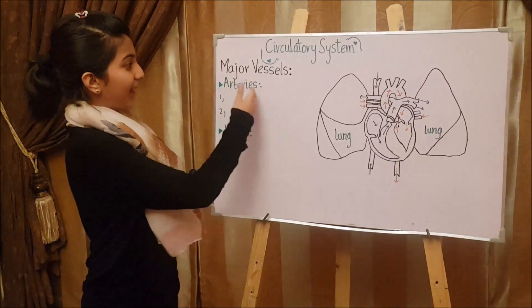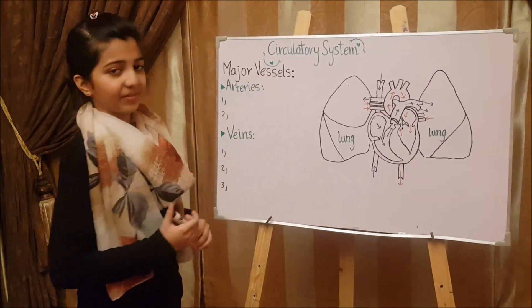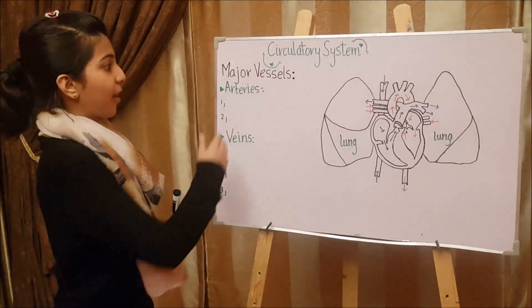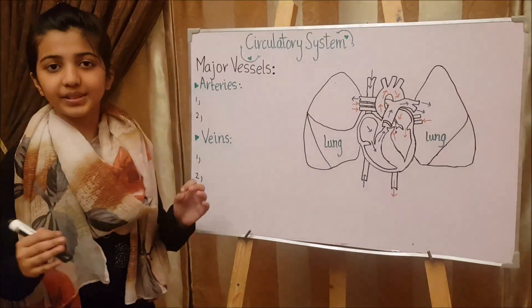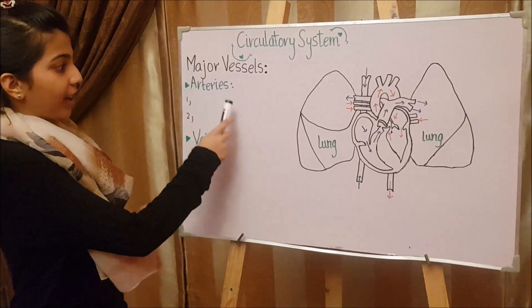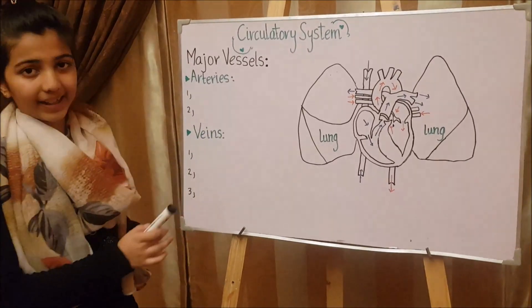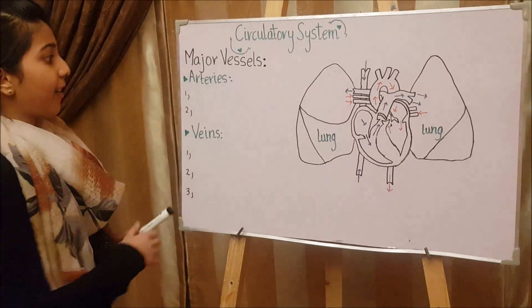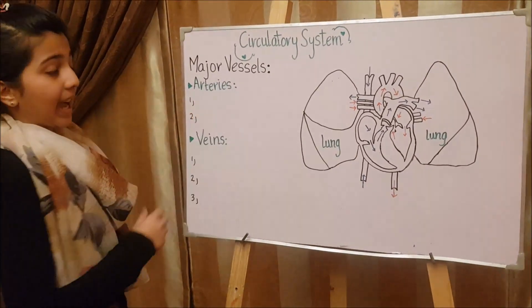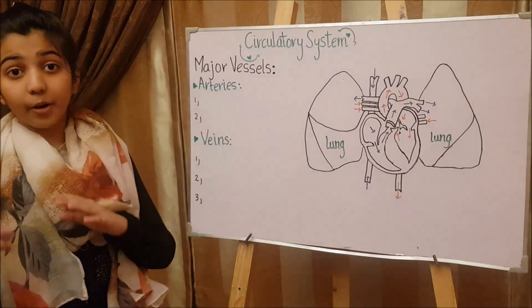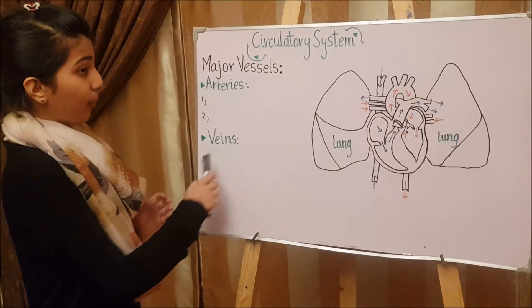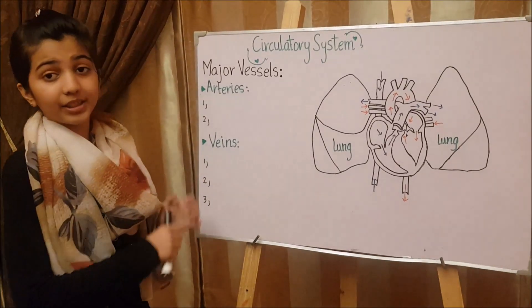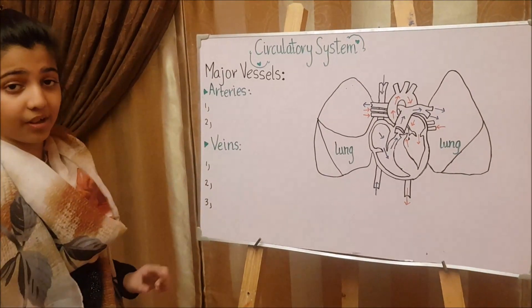Let's continue with the major vessels of the heart. Our blood vessels are divided into two types: arteries and veins. Arteries carry blood away from the heart, and veins carry blood towards the heart.